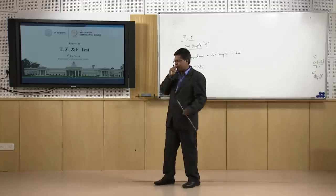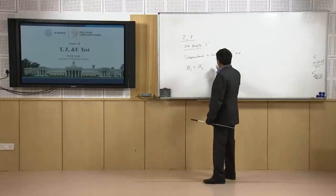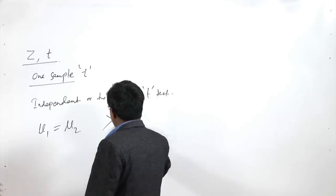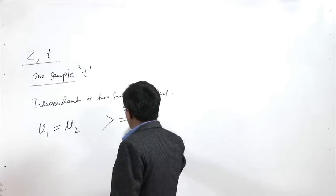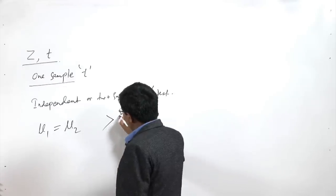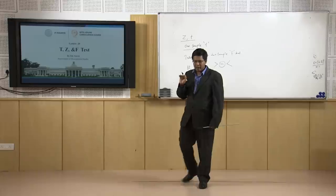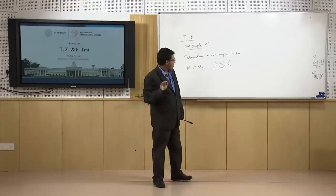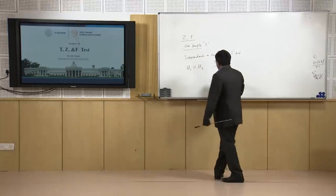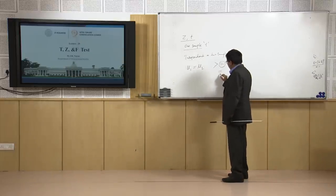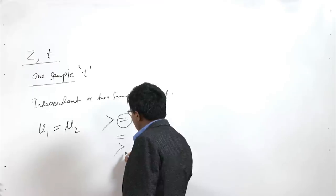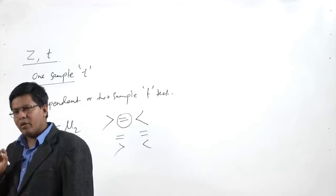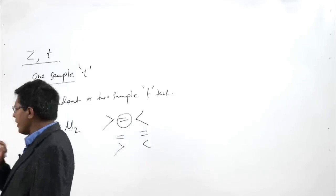Remember, while doing a hypothesis test there are three possible conditions in statistics: greater than, equal to, and lesser than. The equal-to case is always used for the null hypothesis — remember that forever. The null hypothesis can also be greater than or equal to, or lesser than or equal to, but equal-to is for sure in the null hypothesis. Never get confused about that.